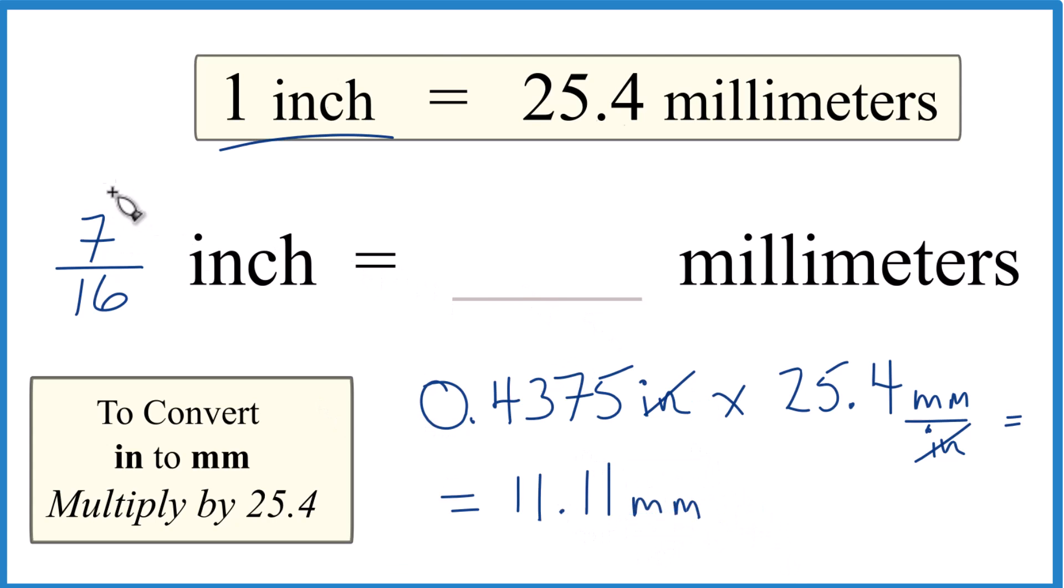So in answer to our question, 7/16 of an inch is 11.11 millimeters. This is Dr. B. And thanks for watching.